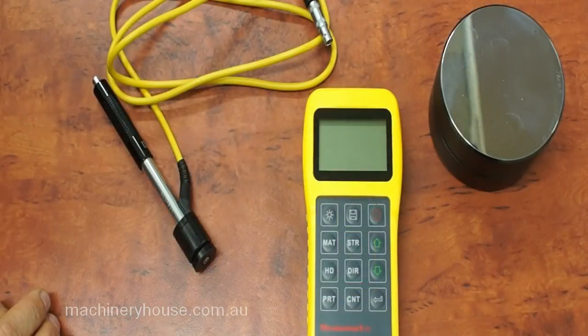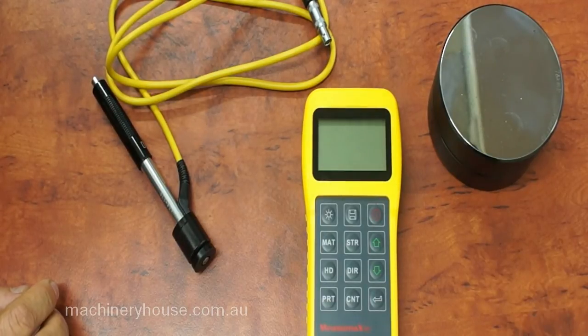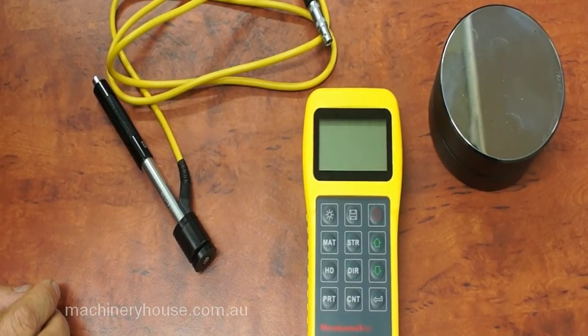I will now show you a quick operation of the portable hardness tester. To begin, insert the plug of the impact device into the correct socket on the tester.